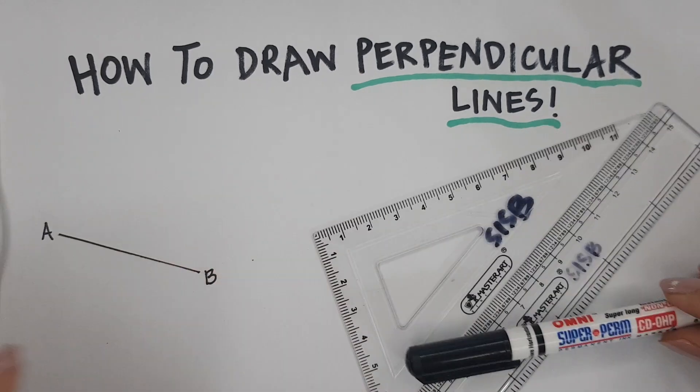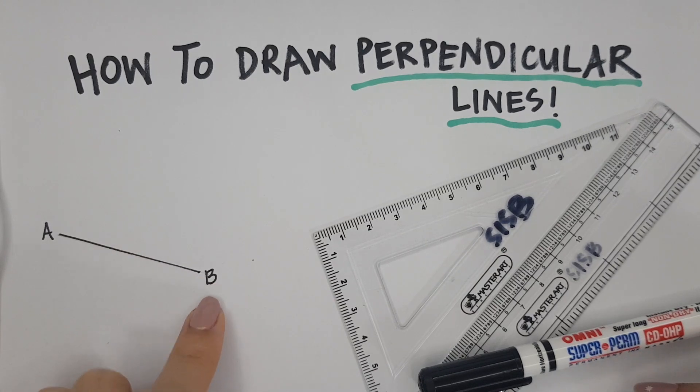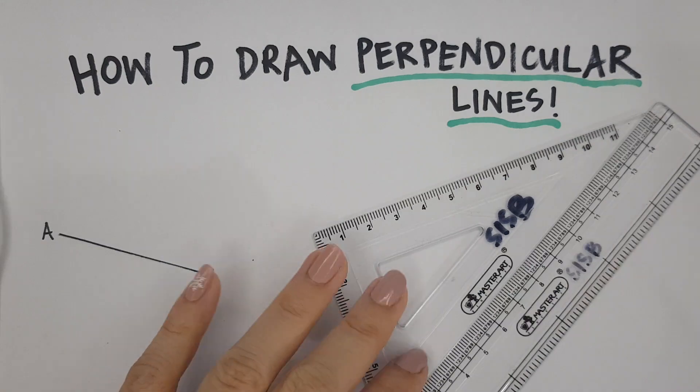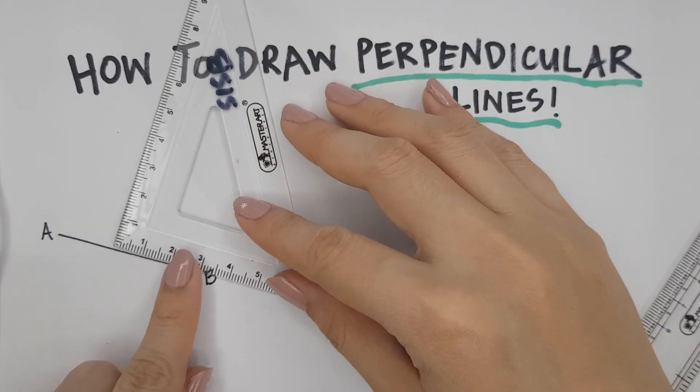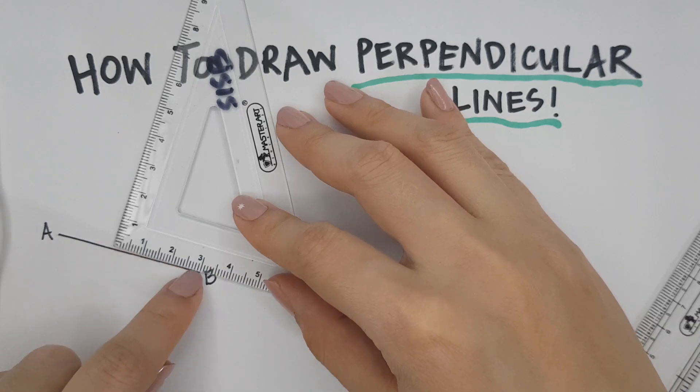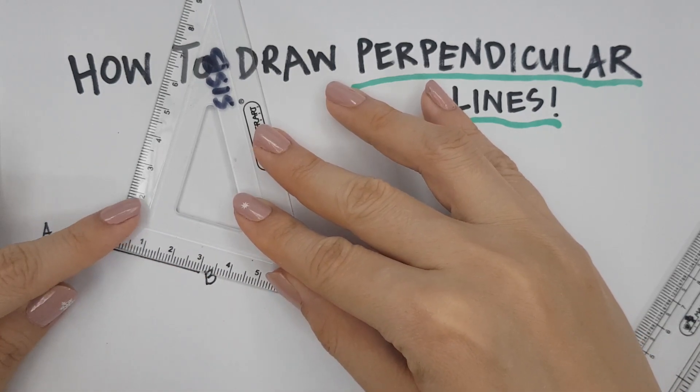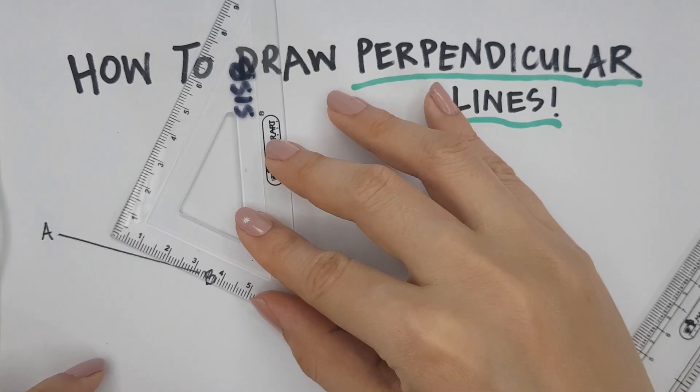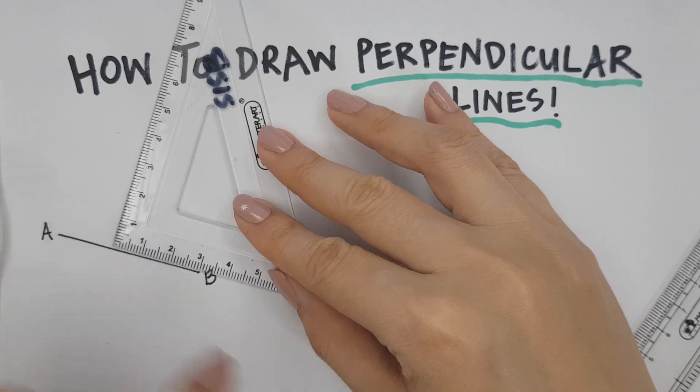So perpendicular lines. If they have already given you a line and they ask you to draw a line that is perpendicular to the line that they gave you, then all you need is to get your set square and put it on AB. Now it's very important that you put it exactly. If your ruler is a bit slanted, it will not work.